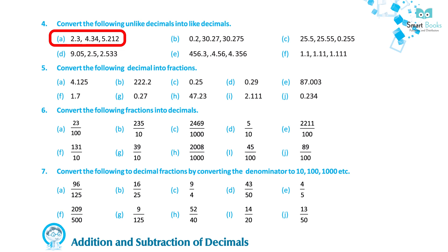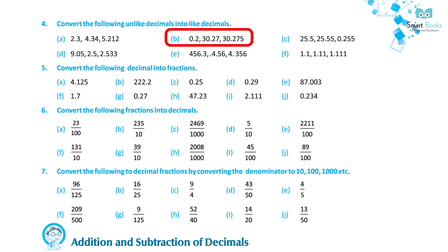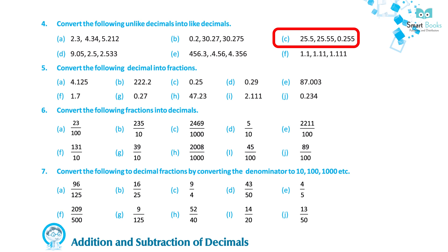Question 4: Convert the following unlike decimals into like decimals. A. 2.3, 4.34, 5.212 — Solution: 2.300, 4.340, 5.212. B. 0.2, 30.27, 30.275 — Solution: 0.200, 30.270, 30.275. C. 25.5, 25.55, 0.255 — Solution: 25.500, 25.550, 0.255.